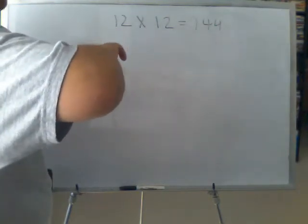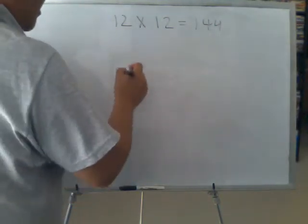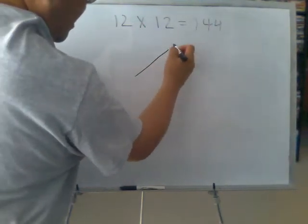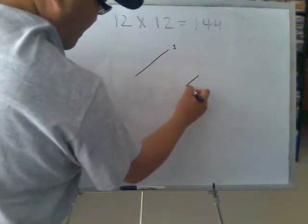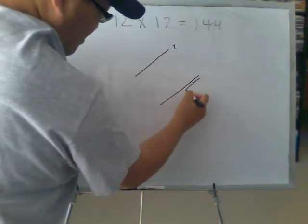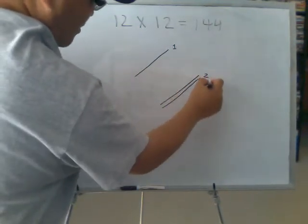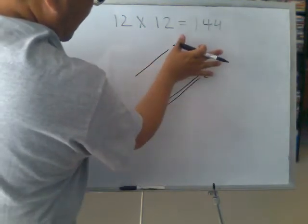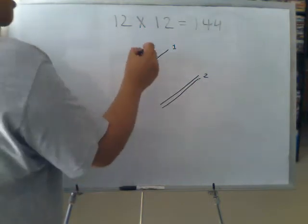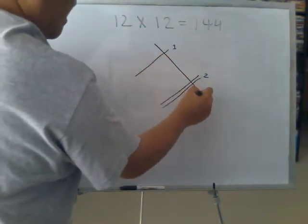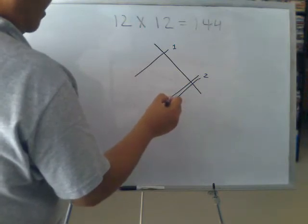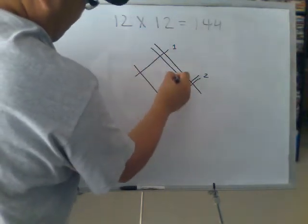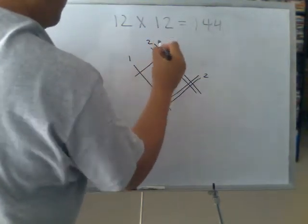So I'm going to teach you the Japanese multiplication method. We express 12 by drawing lines diagonally. You can think of this as the one digit of 12, and this is the two digit of 12. Diagonally from the bottom left to the upper right like this. And then we draw another diagonal that is also 12. This is 12 right here.